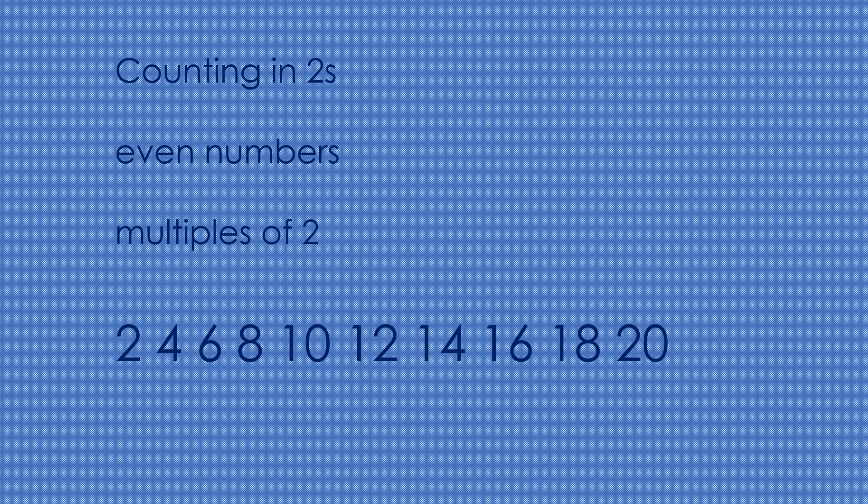Now, what did you notice after the skipping? Have a think. Yes, if you notice that all the numbers were even numbers and all the numbers were multiples of 2, you're correct. Also, counting in twos is more efficient and quicker than counting in ones.